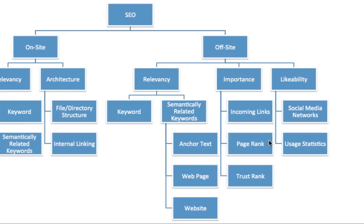Importance is generally measured by the number of incoming links to a particular page or domain. We take that one step further by looking at page rank. Google doesn't report the real page rank value — they report toolbar page rank, which is not very accurate and not updated often. So we have our own proprietary value assigned in lieu of page rank. We're also looking at what we call trust rank: how trustworthy the links pointed to your website are in Google's eyes, measured using our own methodology similar to how Google measures trust rank.